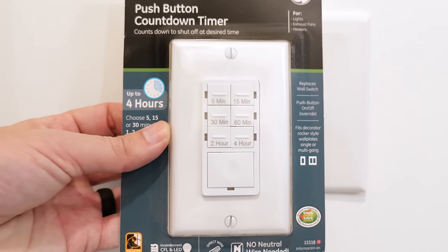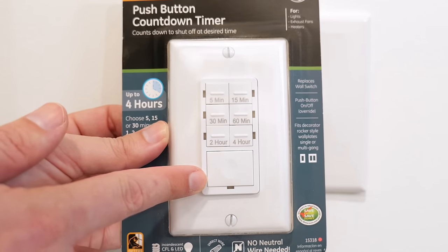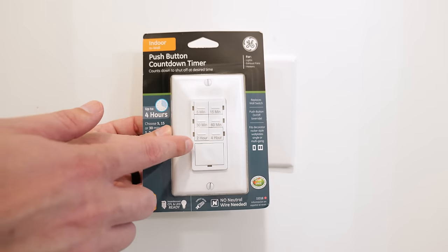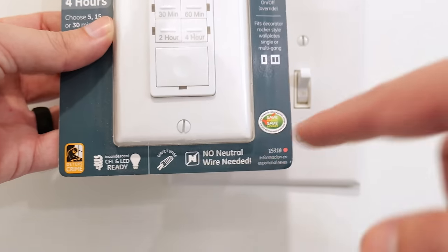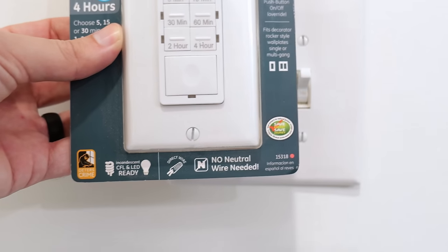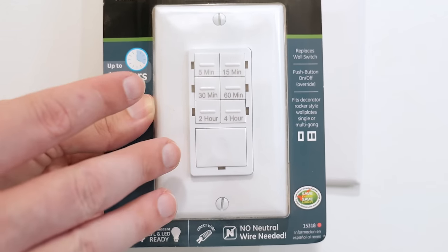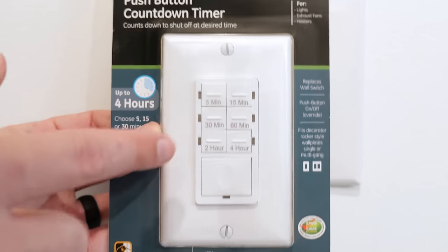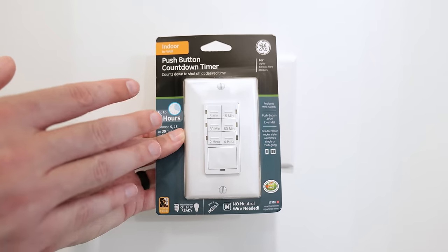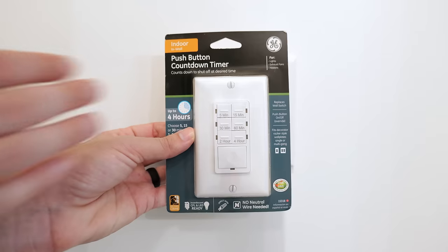This switch here will do all of the same things. It looks a little bit different where the on/off is just this button down here, and then you can either pick either 5 minutes, 15 minutes, 30 minutes, 60 minutes, 2 hours, 4 hours. But if we look down here at the bottom, you can see right here where it says no neutral wire needed. So there are switches out there that you will not need a neutral wire on. If you've got a switch loop, it's not a problem. You can still install one of these switches. The instructions will pretty much be the exact same with the exclusion of the part dealing with the neutral wire and possibly the ground.